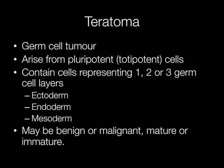To briefly give examples of the different cell layers: skin arises from ectoderm, gut epithelium arises from endoderm, and striated muscle, cartilage and fat arise from mesoderm.